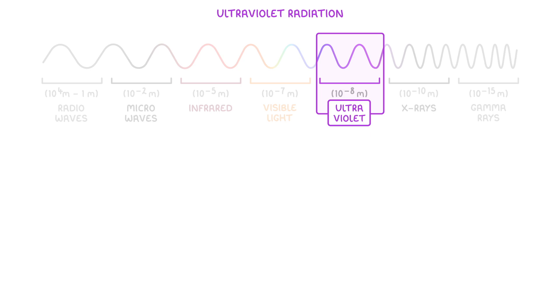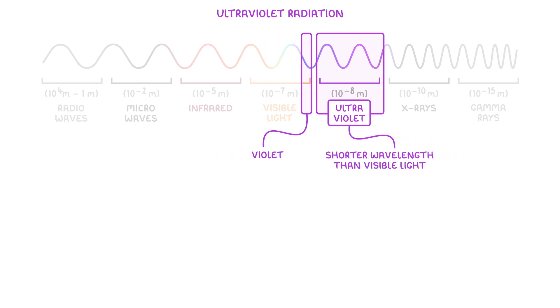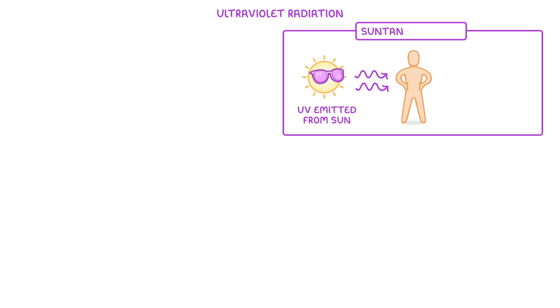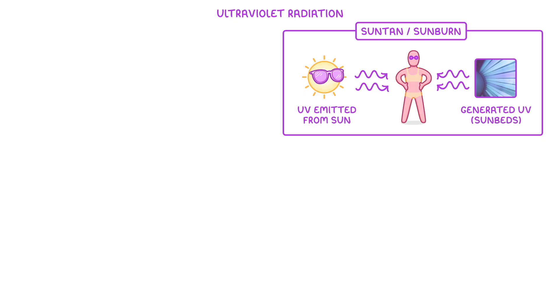Ultraviolet radiation comes after violet on the spectrum and has a shorter wavelength than visible light. The most well known example is the ultraviolet radiation that's emitted from the sun and can give us a sun tan or sometimes sunburn. We can also generate ultraviolet radiation ourselves for use in things like sunbeds, which we use to get an artificial tan.